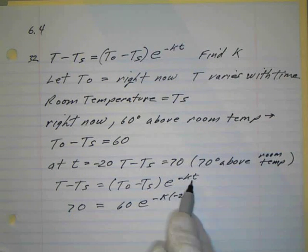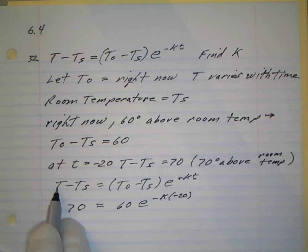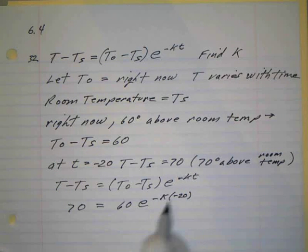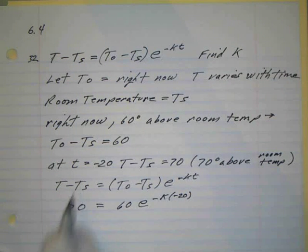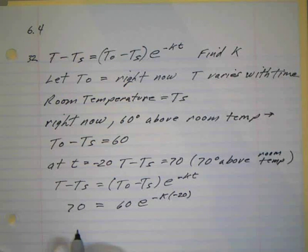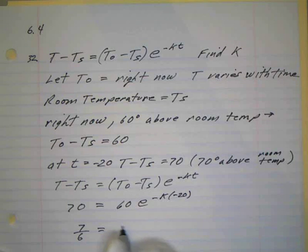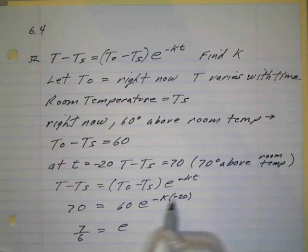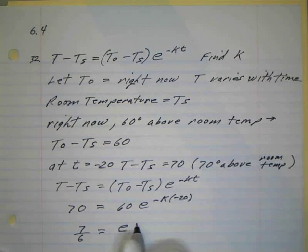See, this is the one that varies with respect to time, so this time has got to coordinate with this temperature here. So at minus 20, this difference was 70. This was the initial. Okay, then if we divide both sides by 60, that's 70 over 60, which reduces to be 7 over 6. We have 7/6 equals e. Now what's a negative times a negative? It's a positive, so 20k.